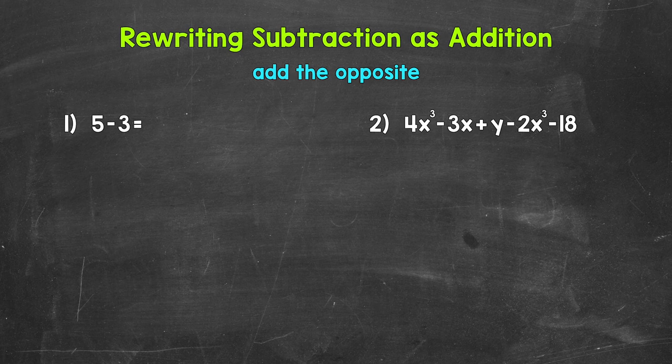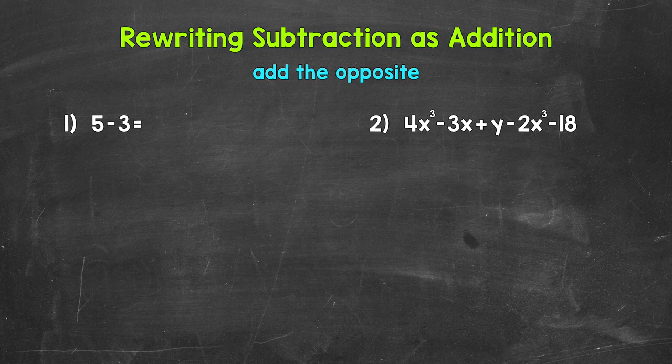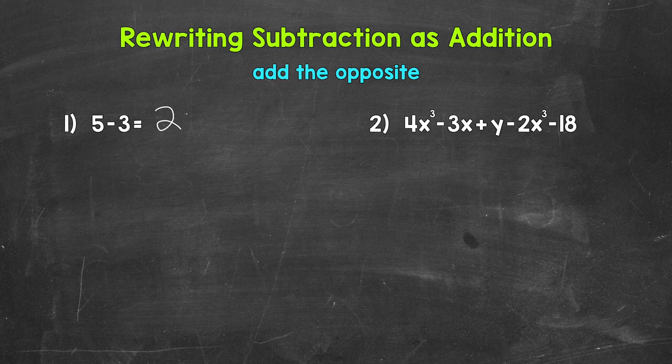Let's jump into number one where we have something simple to start off with, 5 minus 3. This is going to help us see how this strategy works and then we will apply it to an algebraic expression. We know that 5 minus 3 equals 2. We start with 5 and then decrease in value by 3 so we end up with 2.